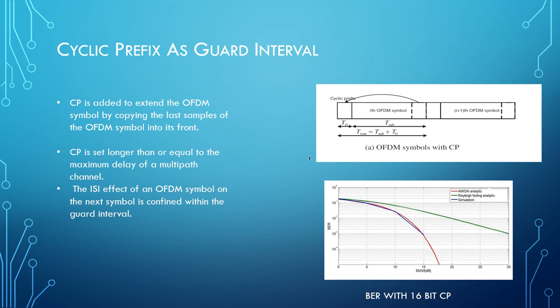CP is set longer than or equal to the maximum delay of the multipath channel for the reason that I have explained earlier, as it incurs ISI effect. If the proper timing is set for the CP, we can mitigate the ISI effect of an OFDM symbol and thus transmit better data. As we can see from the graph, the BER with 16-bit cyclic prefix shows the BER performance of the Rayleigh fading channel has improved a lot from what it was without the cyclic prefix padding. Hence this guard interval definitely improves the performance of the OFDM transmission.